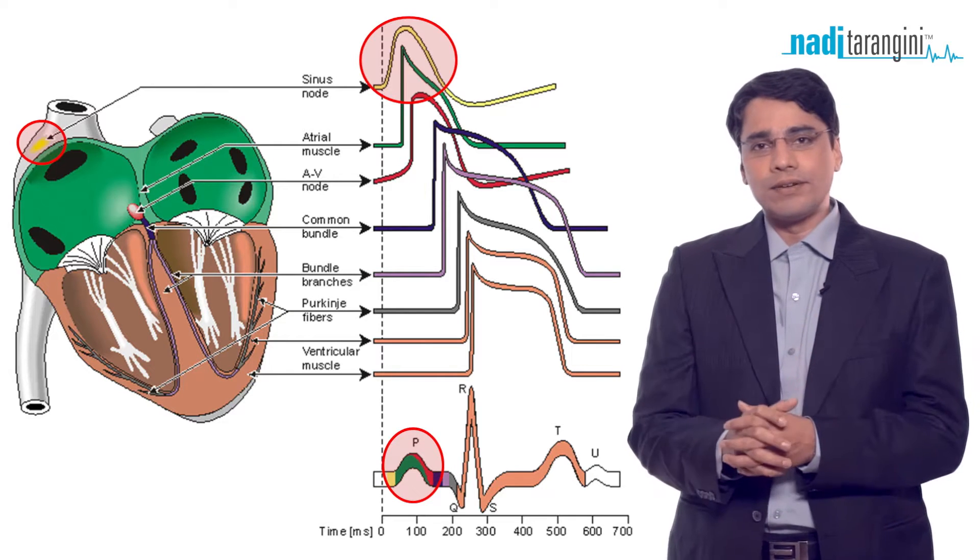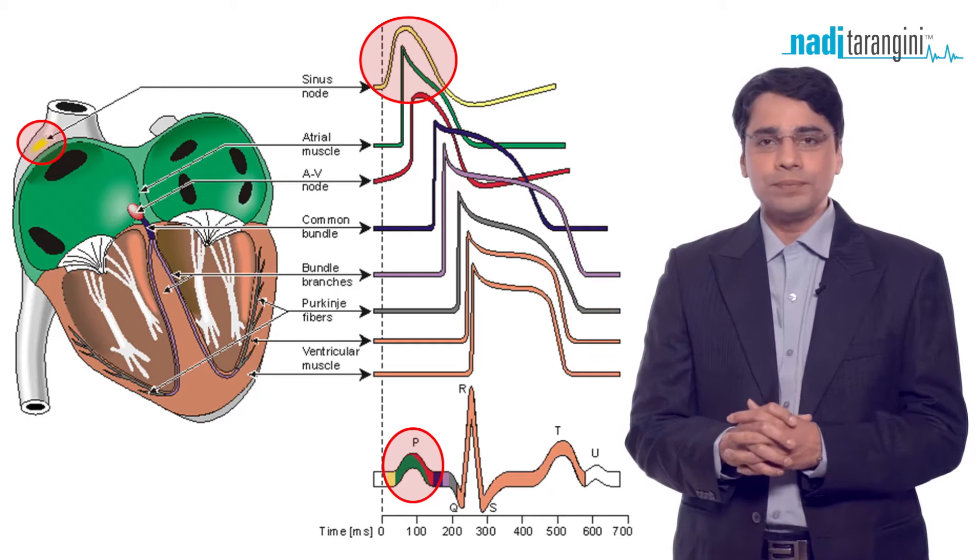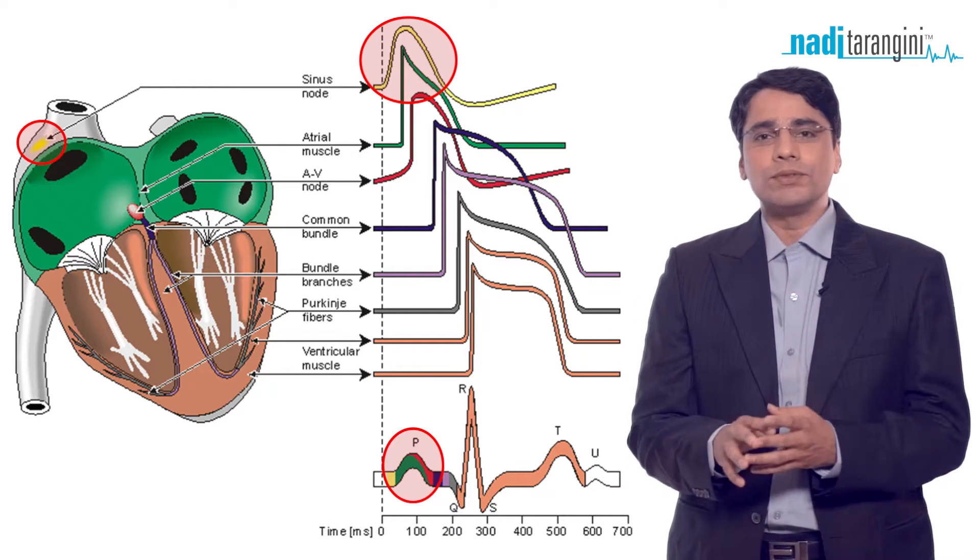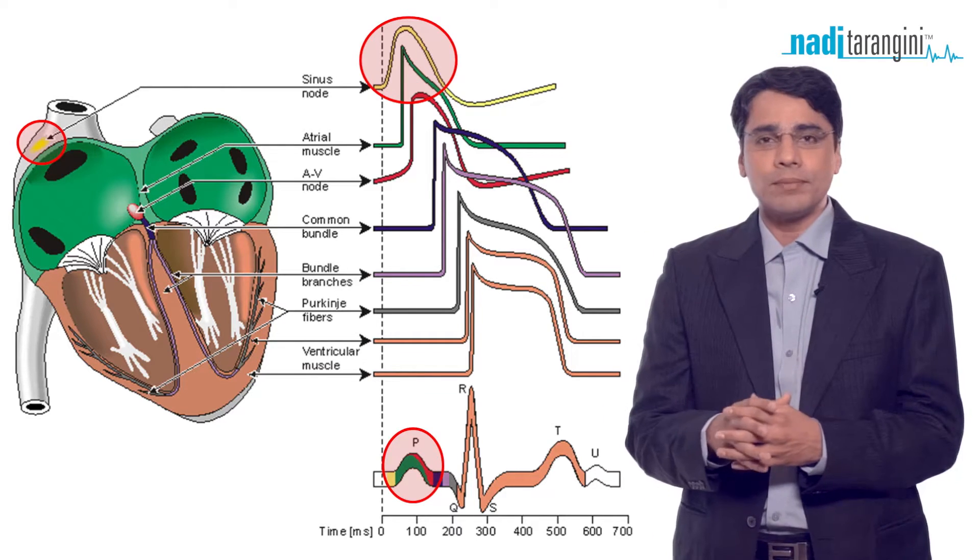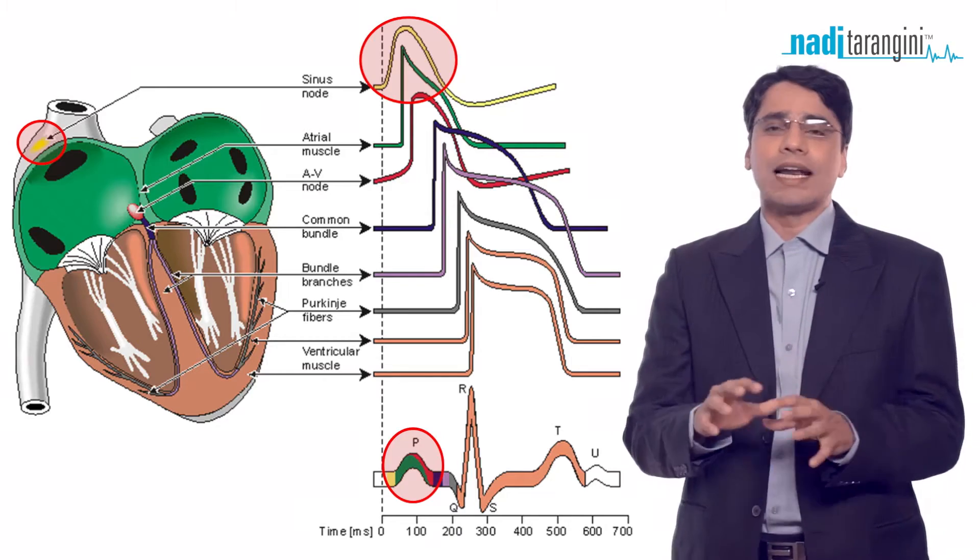An ECG signal follows a PQRST kind of rhythm. A pulse signal should also follow a similar pattern, but because of the variations, it's slightly different.